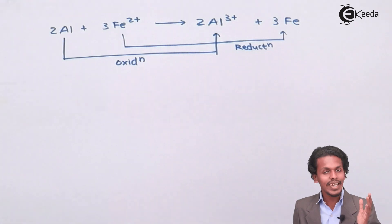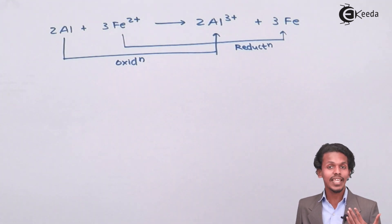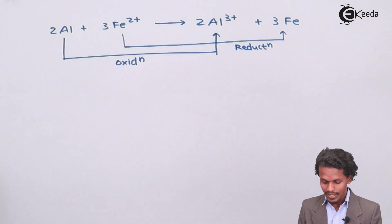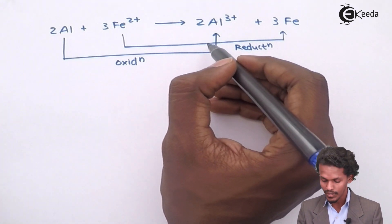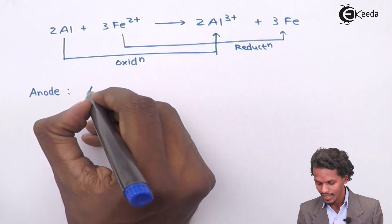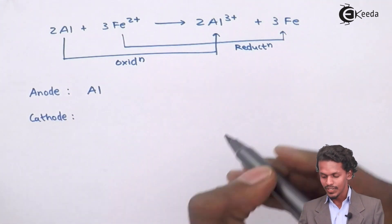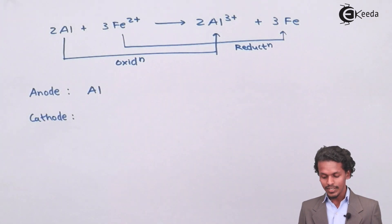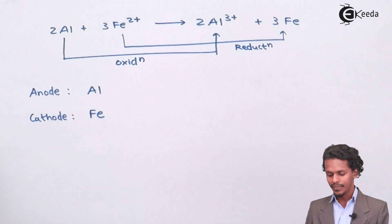Once we have determined where oxidation and reduction take place, it is easy to identify anode and cathode. The anode is the one that shows the oxidation process — in this case, aluminium. The cathode is the one that undergoes reduction — in this case, Fe. So reduction takes place at the cathode, and the cathode is Fe.